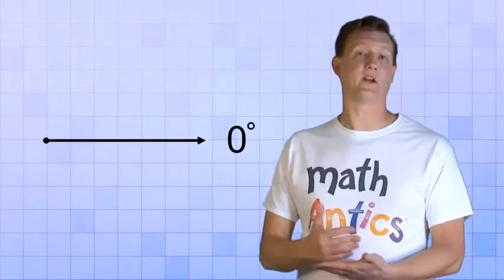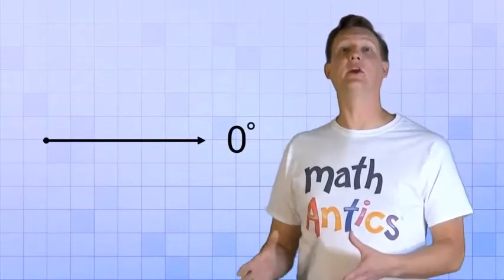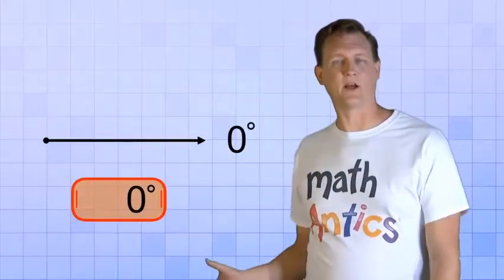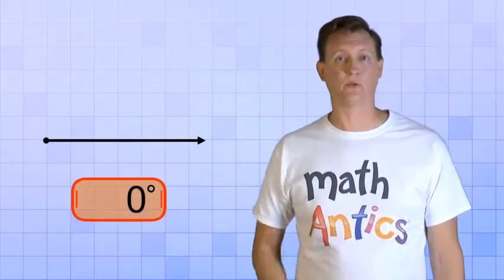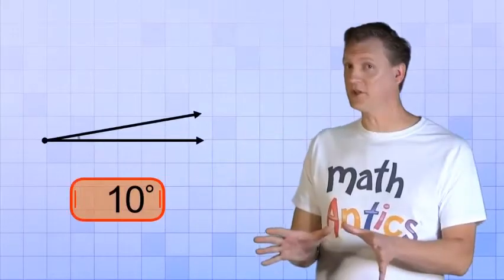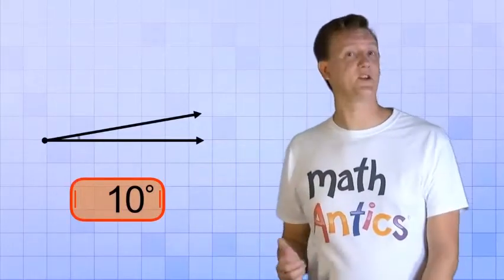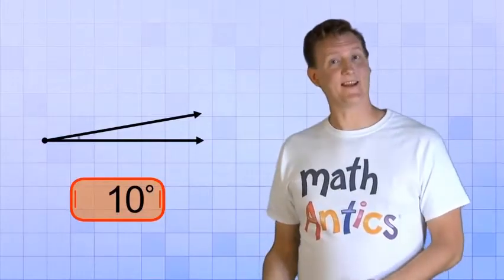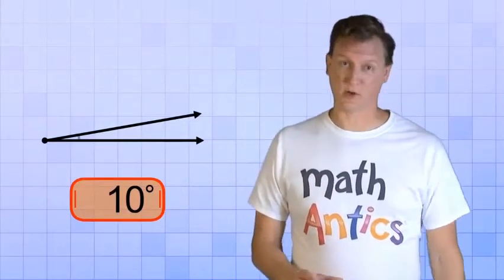Instead, we're going to keep on rotating our top ray and watch the angle get bigger and bigger. This special readout here will tell us how many degrees our angle measures. Now let's start out slow… 1 degree, 2, 3, 4, 5, 6, 7, 8, 9, and 10. Now let's hold it there for a second. So this is what 10 degrees looks like. So we can see that a 10 degree angle is still a very small angle.